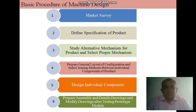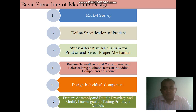The next step is to prepare the general layout of configurations and select the joining methods between the individual components. In this step, the designer prepares a block diagram showing the general layout of the selected configuration. For example, the layout of an electrically operated overhead traveling crane includes components like electric motors, flexible couplings, shafts, and clutches to connect and disconnect the electric motors, arranged in a proper sequence from first to last element.